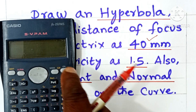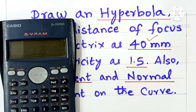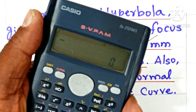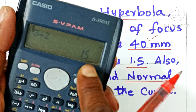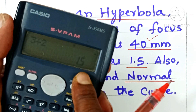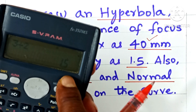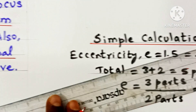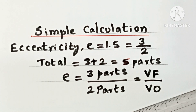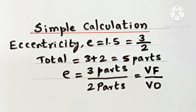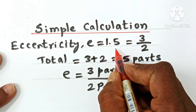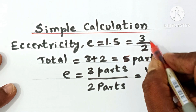1.5 is to be written as 3 by 2. 3 divided by 2 equals 1.5. So 1.5 shall be written as 3 by 2 in fractional form. In the side of the drawing sheet, work out a simple calculation where eccentricity, denoted by small letter e, is equal to 3 by 2. This 1.5 given in the question can be written as 3 by 2 in fractional form.